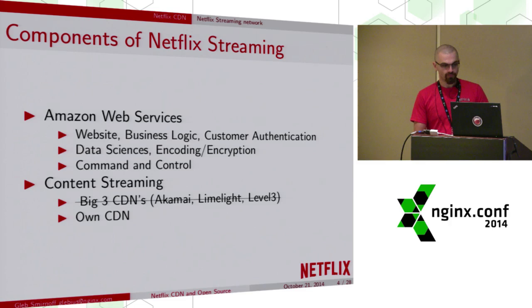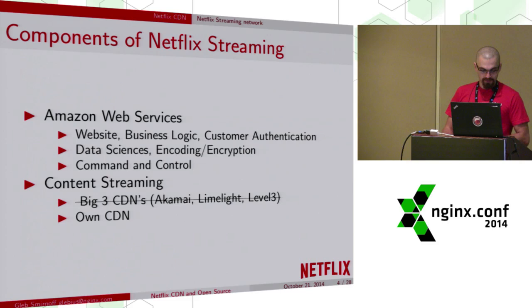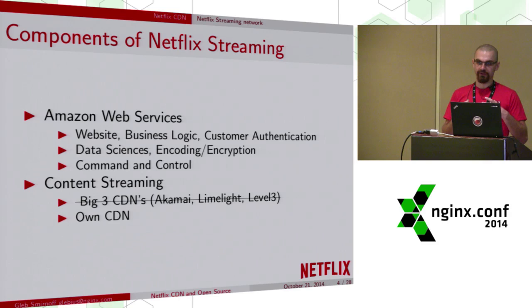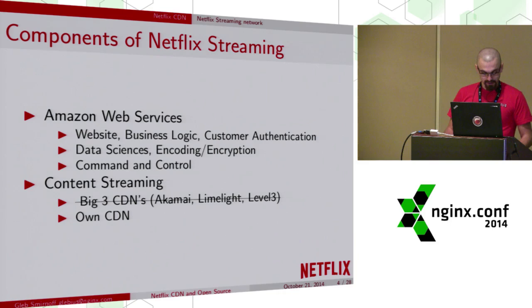The Netflix video collection consists of over one petabyte of data, and every byte of that data is available on demand right now. Speaking of the USA, we are the traffic generator number one in North America and we cover more than one third of all downstream traffic. Now let's look at how this enormous traffic generator works inside — here's the basic layout of the components of Netflix video streaming.